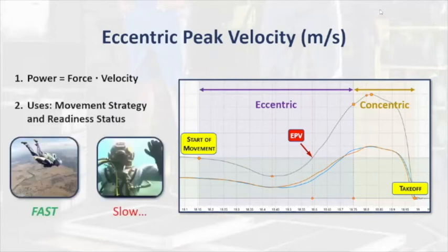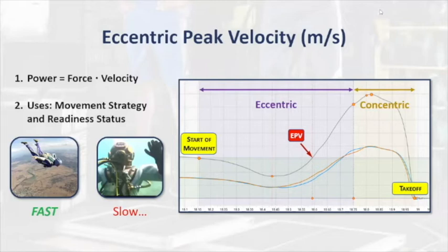We can use eccentric peak velocity to assess movement strategy and athlete readiness. Baseline testing easily determines an athlete's eccentric strategy and where improvements can be made. However, periodic testing may reveal changes in strategy when an individual moves significantly slower than previous tests. Common reasons for this include soreness, injury, or general dampening of the neuromuscular system due to fatigue or other factors.